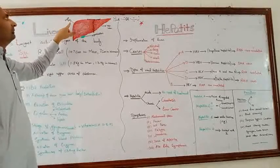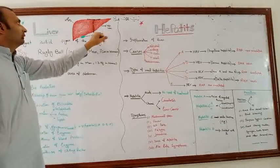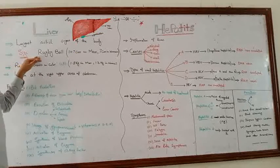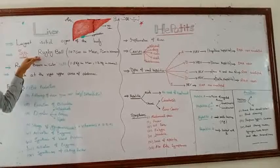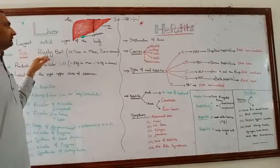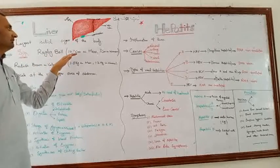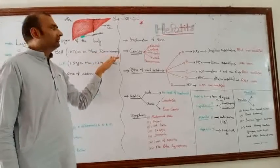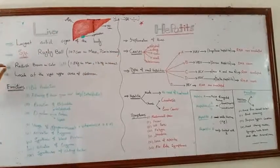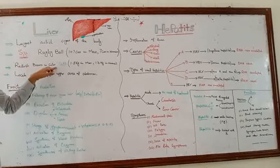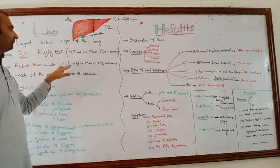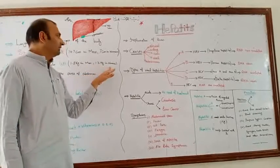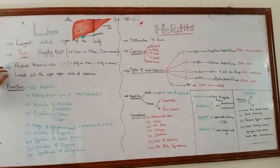The liver consists of two lobes: the right lobe and the left lobe. The size of the liver is approximately equal to a rugby ball, and its size in centimeters is 10.7 cm in men and 7 cm in women. Its color is reddish-brown.